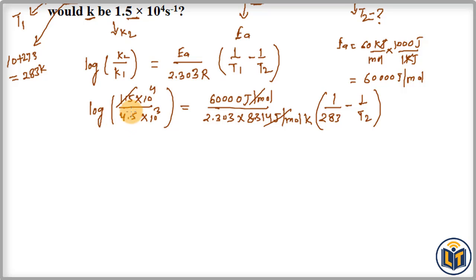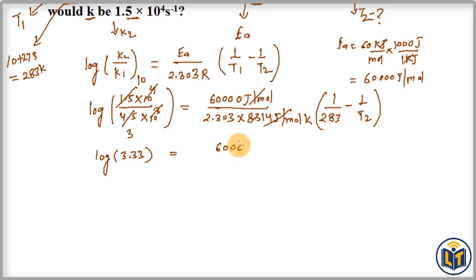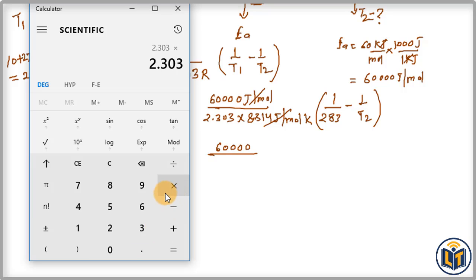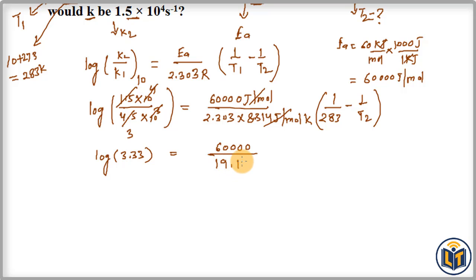Dividing 1.5 by 4.5 gives 1/3, and subtracting the exponents (4 − 3 = 1) gives a factor of 10, so 10/3 = 3.33. On the right side, multiplying 2.303 by R (8.314) using a calculator gives 19.147, with units of K. So we have log(3.33) = 60,000 / 19.147 × (1/283 − 1/T2).